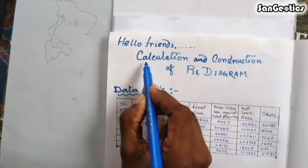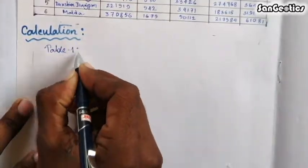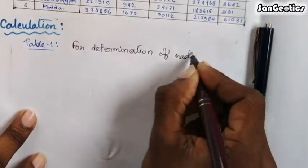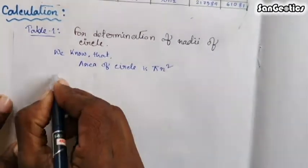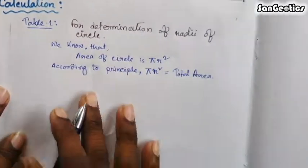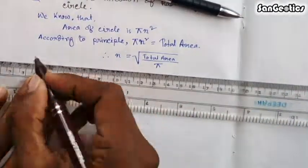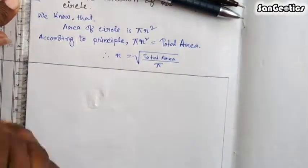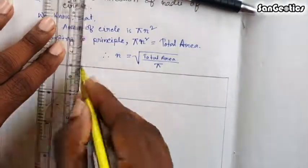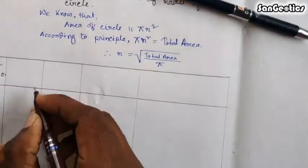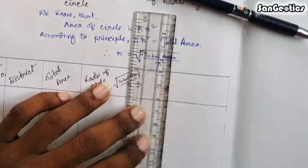Calculation step one: for determination of the radius of a circle, we know that the area of a circle is π r². According to the principle, π r² equals total area, therefore r equals the square root of (total area / π). We need to construct a calculation table with captions: serial number, district, total area, and radius of circle r = √(total area / π), then scale selected and reduced radius according to scale in centimeters.